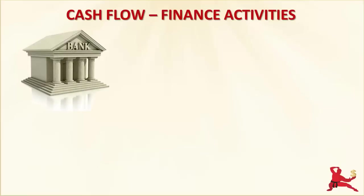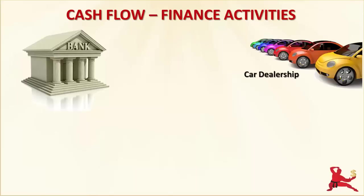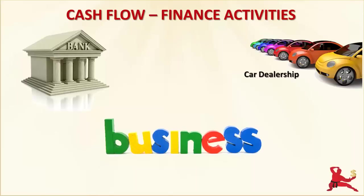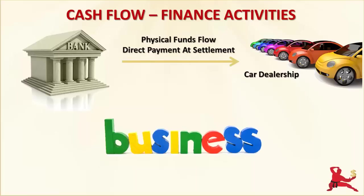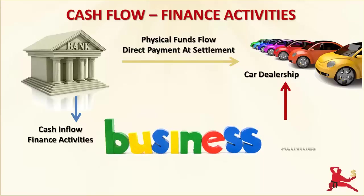Note that even if the money from the loan that your business takes out did not pass through your bank account, it is still shown as a cash inflow in the Finance Activities of the Cash Flow Statement. For example, if your business borrows money to buy a car, the money is likely to be paid directly by the bank to the car dealership. But your Cash Flow Statement will show the amount of the loan as a cash inflow under Finance Activities, and the payment for the car will show as a cash outflow under Investment Activities.